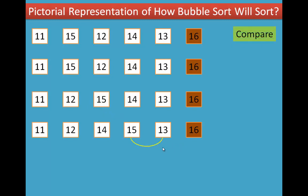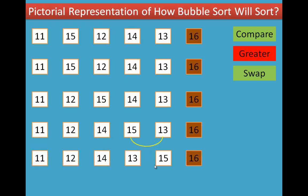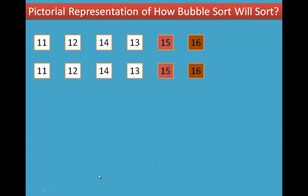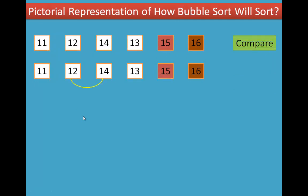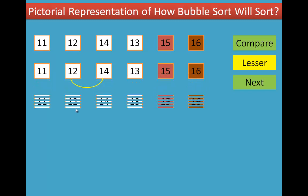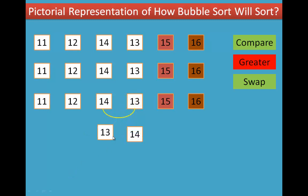Then 15 and 13 will compare. 15 is greater than 13, so we swap. Now we can see the number of elements in the set. Then 11 and 12 will compare — 11 is lesser. Next, 12 and 14 compare — lesser. Then 14 and 13 compare — 14 is greater, so we swap.